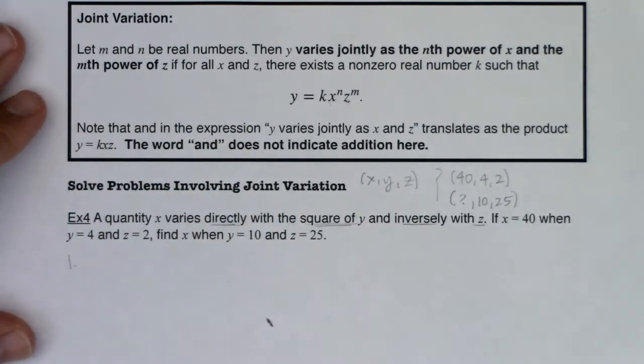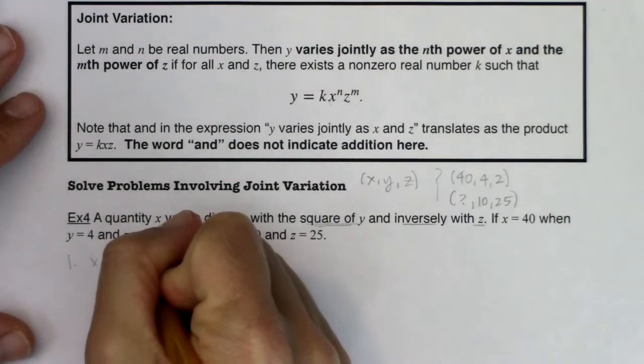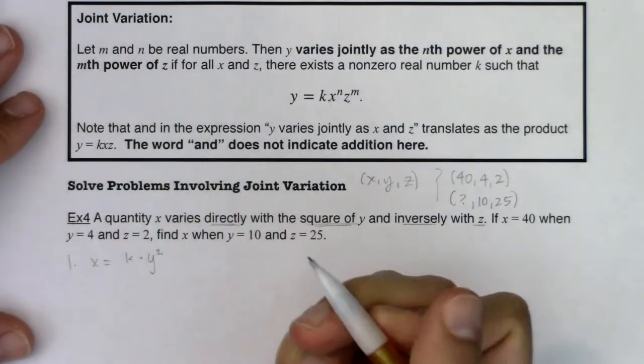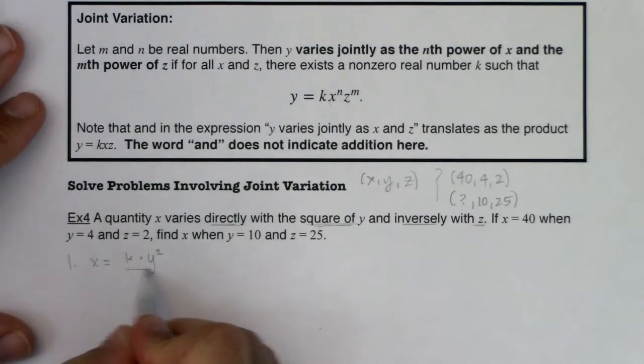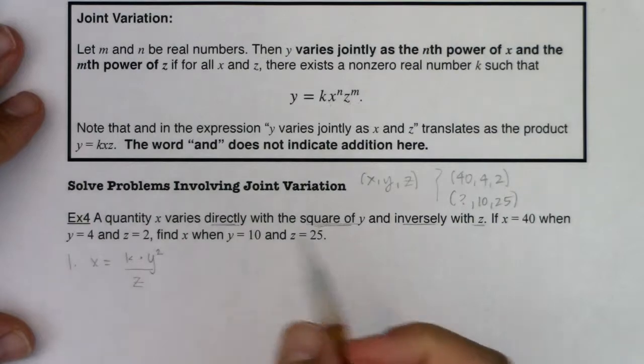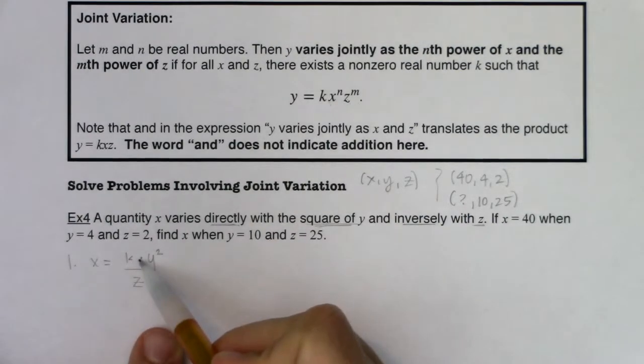So the first thing I want to do is write the general relationship for these variables in equation form. So if I take a look at this, X varies directly as the square of Y. So I will say X is varying directly as the square of Y. Alright, but it also says and inversely with Z. So I'm going to go ahead and divide out by Z. Because again, whenever you see direct variation, that implies multiplication.